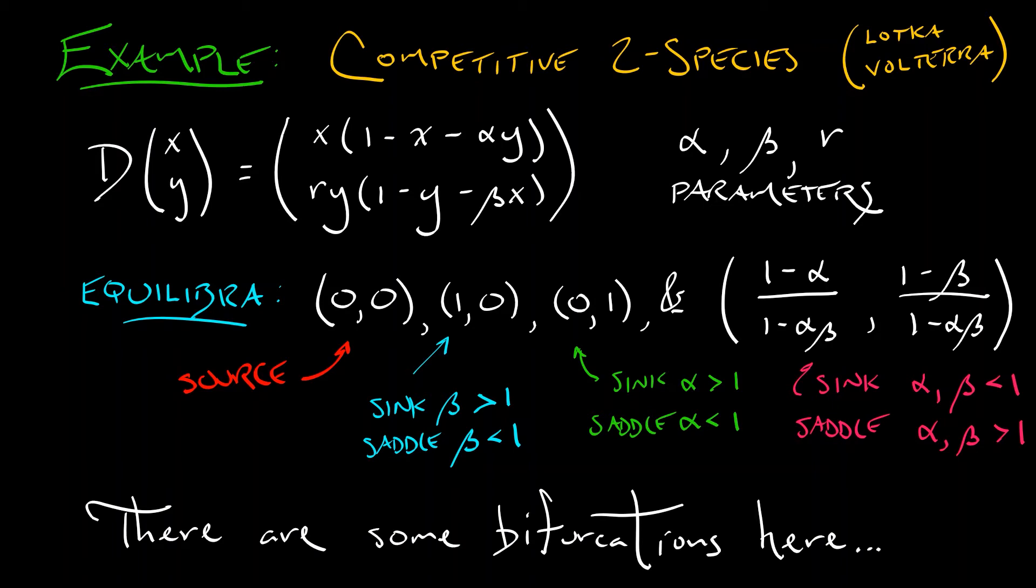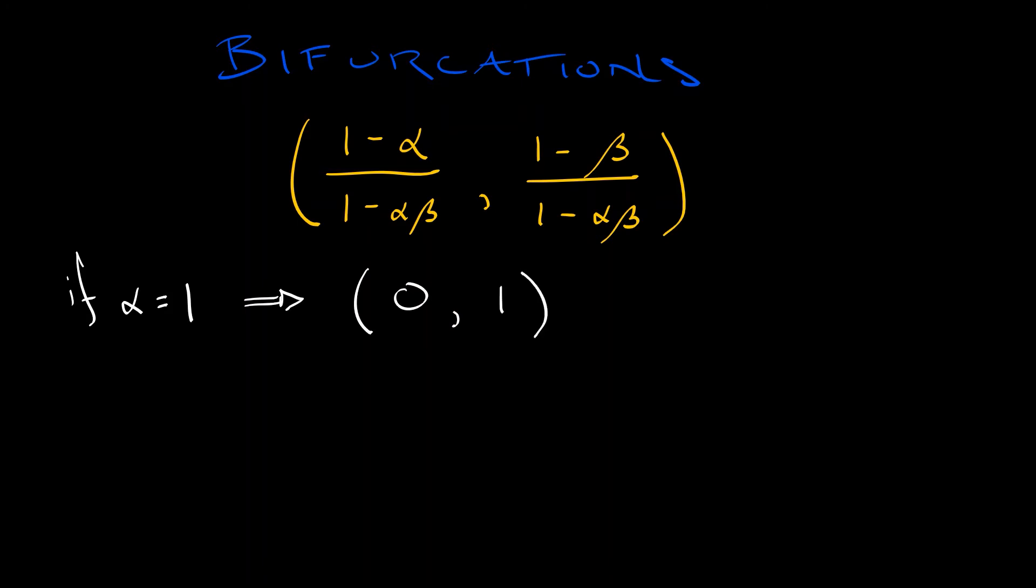Now, you could see that there's some bifurcations going on here. So to figure that out, let's inspect that fourth equilibrium at (1-alpha)/(1-alpha*beta), (1-beta)/(1-alpha*beta). If alpha equals 1, that transition point at 1 of the equilibria, then what does this fourth equilibrium become? Well, it becomes 0 over the denominator, that's 0, and then 1 minus beta over 1 minus 1 times beta, that's 1. So when alpha equals 1, we get the equilibrium (0,1), which is right where the transition happened there.